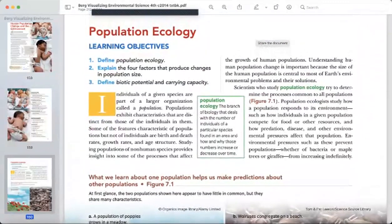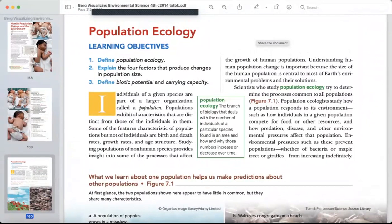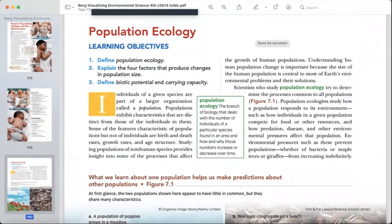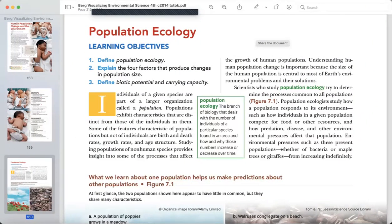So let's discuss population ecology. Individuals of a given species are part of a larger organization called its population. The branch of biology that deals with the number of individuals of a particular species which is found in an area and how and why those numbers increase or decrease over time. That is population ecology.